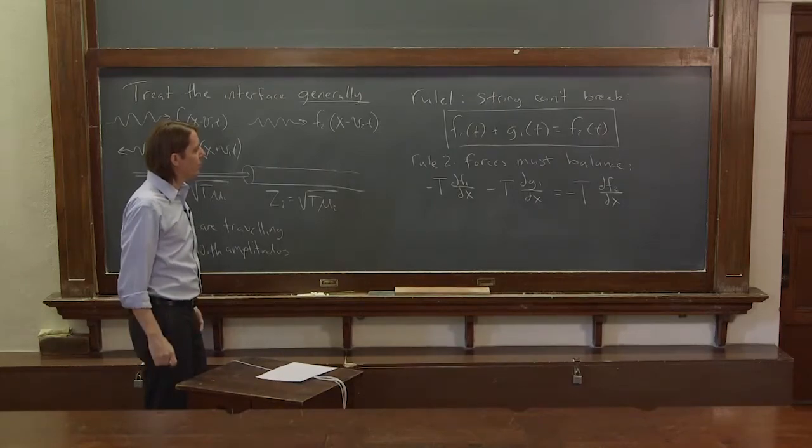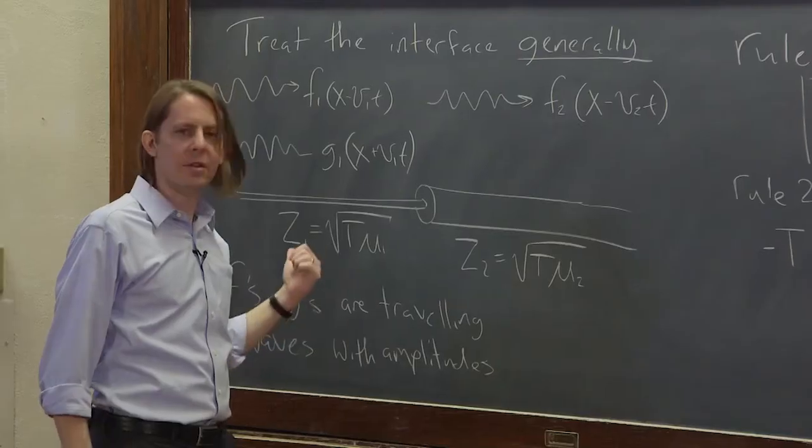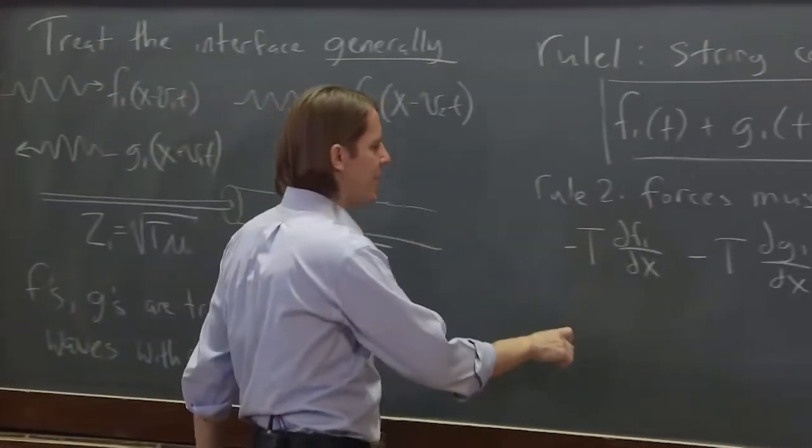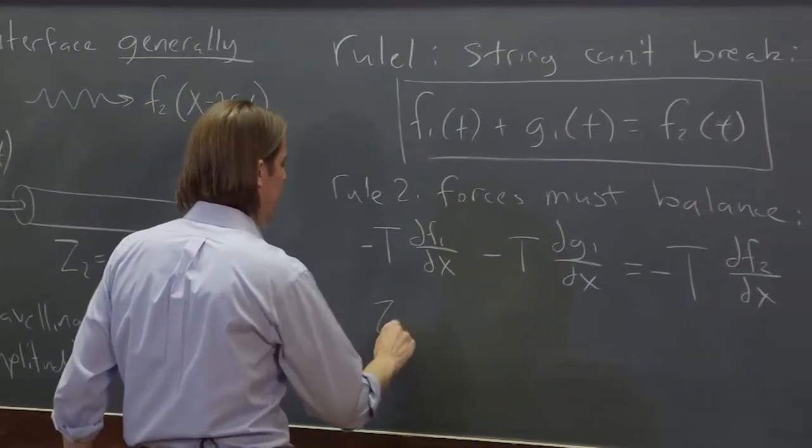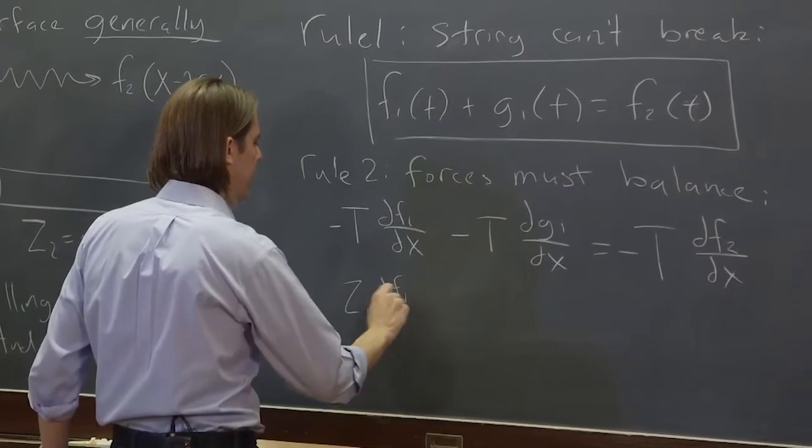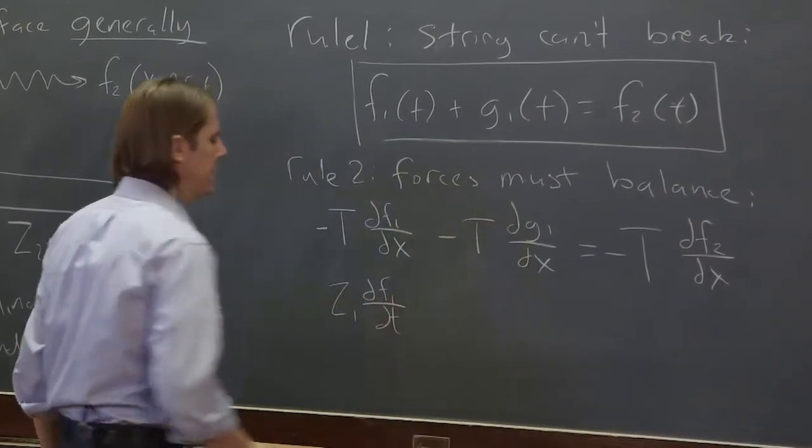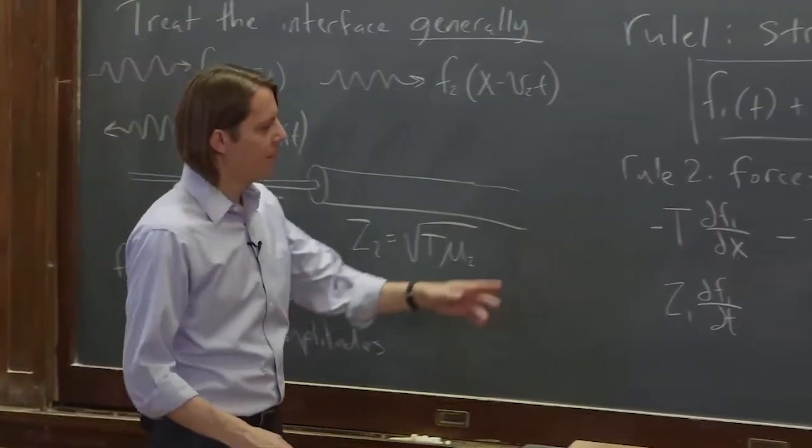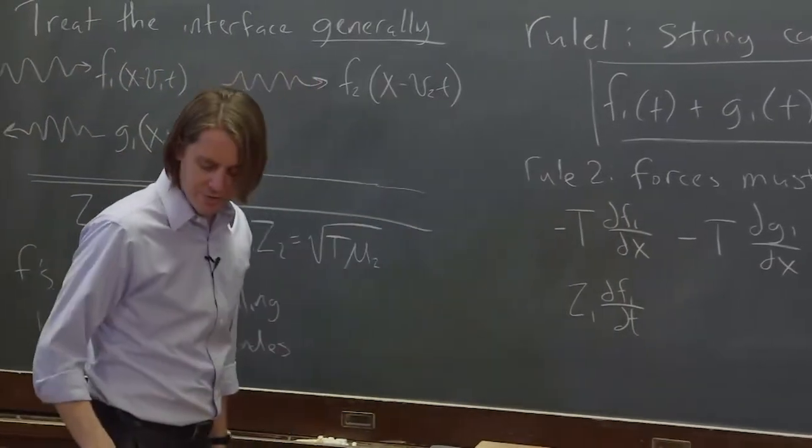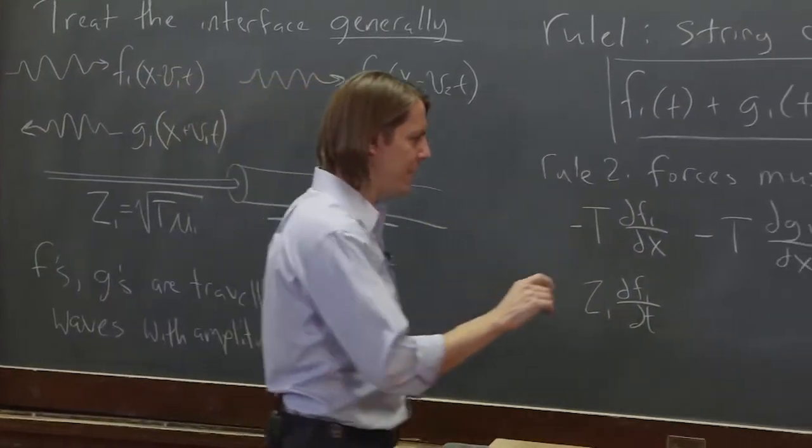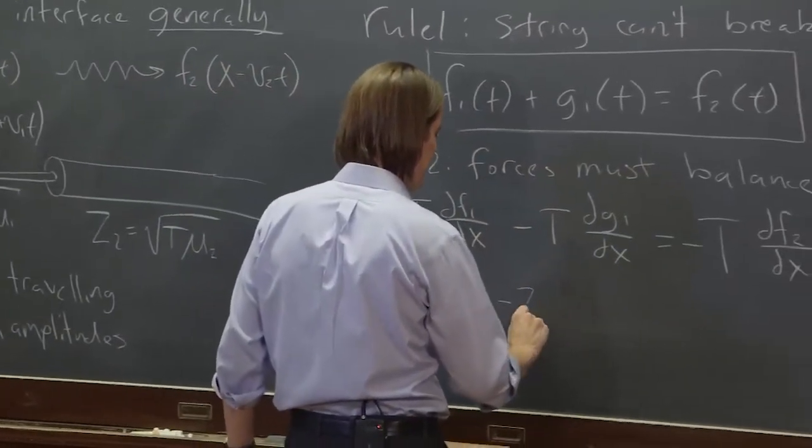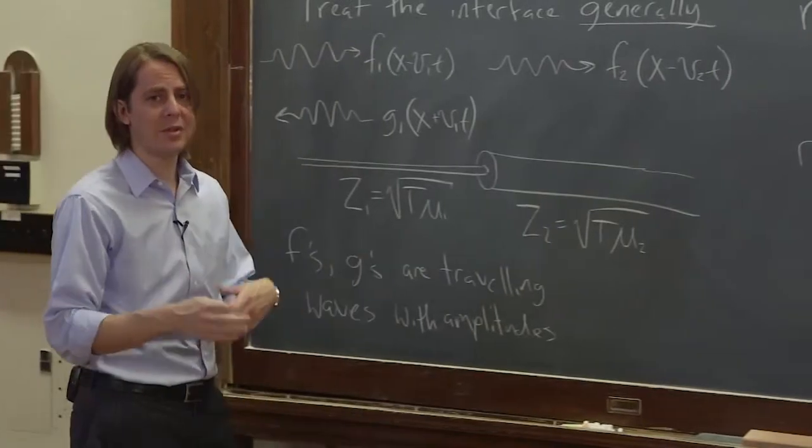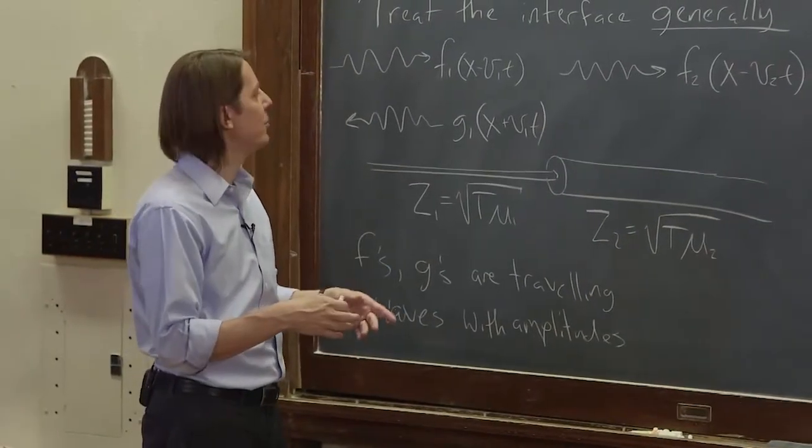Let's see, so now we can convert those to impedances like we just did on the previous couple of boards. We can say this is actually equal to impedance one z1 df1/dt the same way we did a minute ago. This has to equal the minus of that.